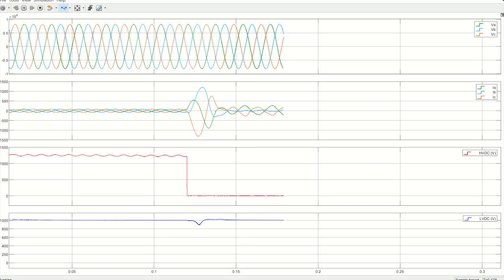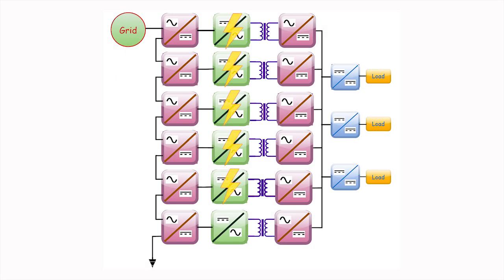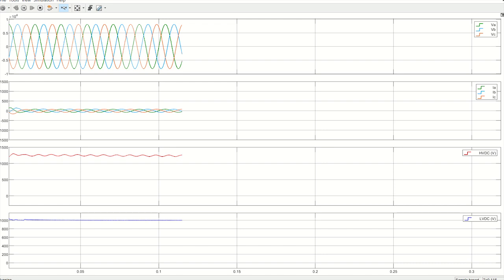In the second case, multiple dual active bridge unit failures within a single phase have been studied. The grid current is rapidly increased and become unstable.